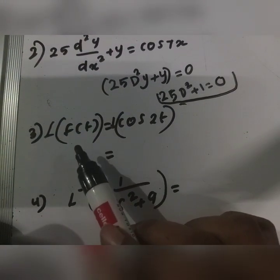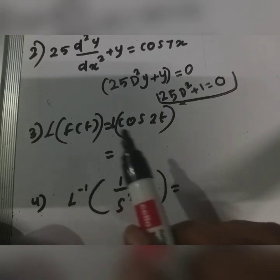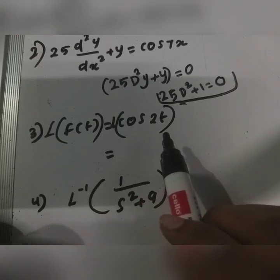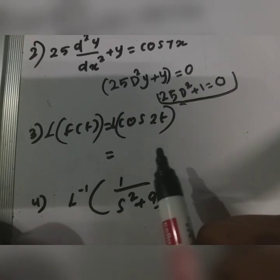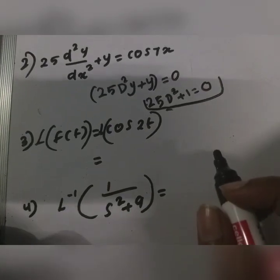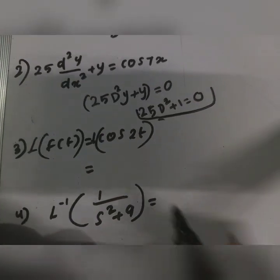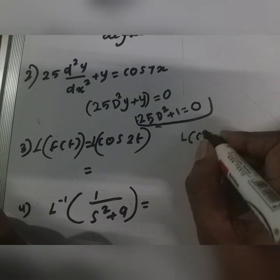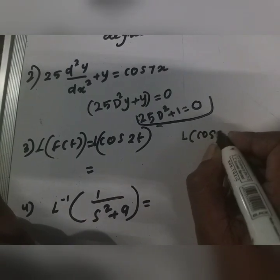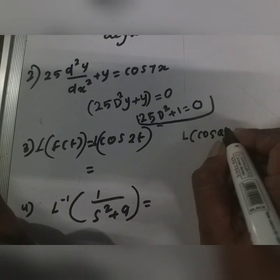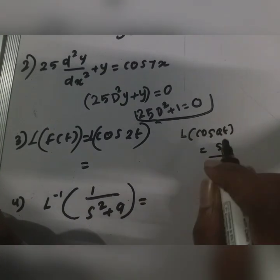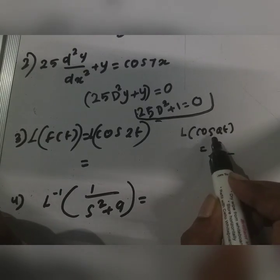Now, Laplace. I want to write the Laplace question. It is cos(2t). I want to write the equation. The Laplace transform of cos(at) is s divided by s squared plus a squared.